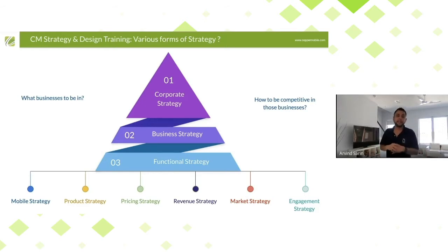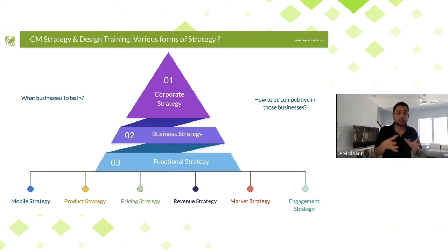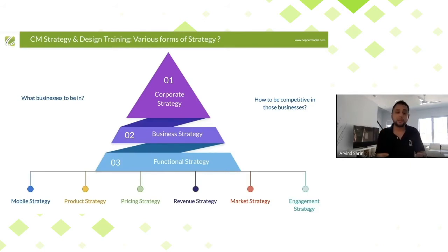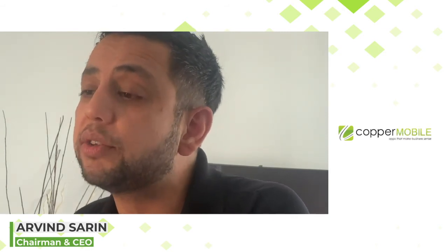After business strategy comes functional strategy. Functional strategy is where we have individual functions within the company and strategy around each one. This is not an exhaustive list, but functional strategies include: mobile strategy, product strategy, pricing strategy, revenue strategy, market strategy, and engagement strategy — these are some of the functional strategies, and they can overlap.